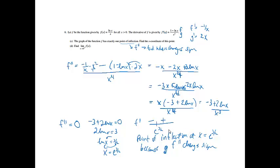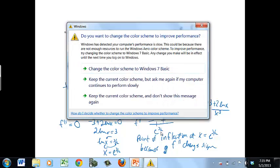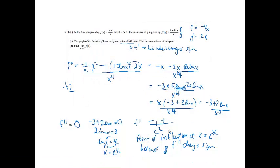That part was worth three points: two points for getting the correct second derivative — one point if you made one mistake — and one point for finding the point of inflection at x equals e to the 3/2.